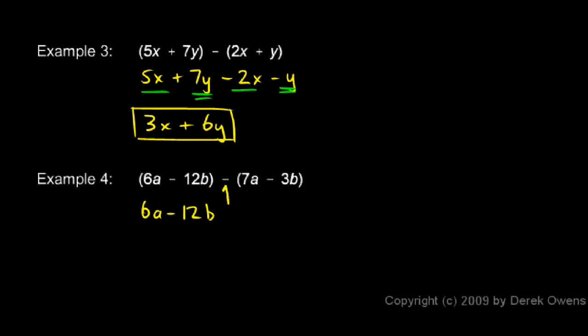Now notice that we're subtracting this whole thing. That means we're subtracting 7a. So I'm going to put a minus 7a, and we're subtracting a negative 3b. And subtracting a negative is the same as adding. So this is like saying plus 3b.